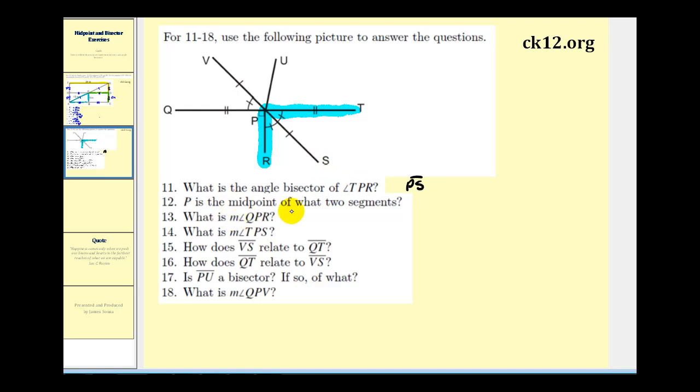Number 12, P is the midpoint of what two segments. Looking at point P, notice that segment QP has two hash marks, and segment PT also has two hash marks. So those two segments are equal to each other, and therefore P would be the midpoint of segment QT. Notice that P is also the midpoint of segment VS, because segment VP has one hash mark, and so does segment PS.